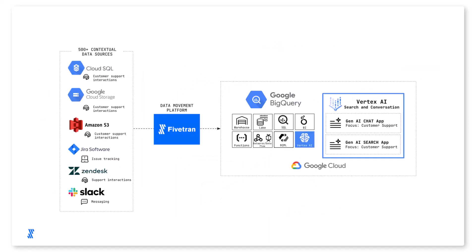My focus today will be setting up with Fivetran a variety of connectors to sources that house my customer service data. That data, pretty much in any enterprise, is typically scattered across multiple platforms, including operational databases, file systems, and applications like Jira, Zendesk, and Slack.